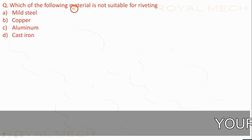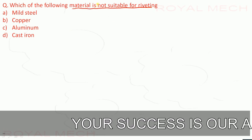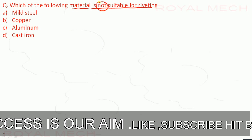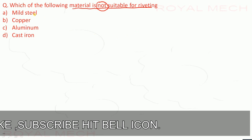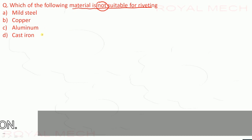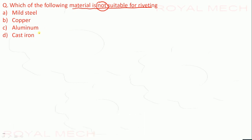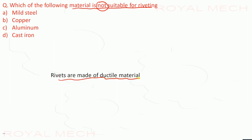Which of the following material is not suitable for riveting? Given options are mild steel, copper, aluminium, and cast iron. Rivets are made of ductile material. Mild steel is a ductile material, copper is also a ductile material, aluminium is a ductile material, and cast iron is a brittle material. Therefore option D is the correct option — cast iron is not suitable for riveting.